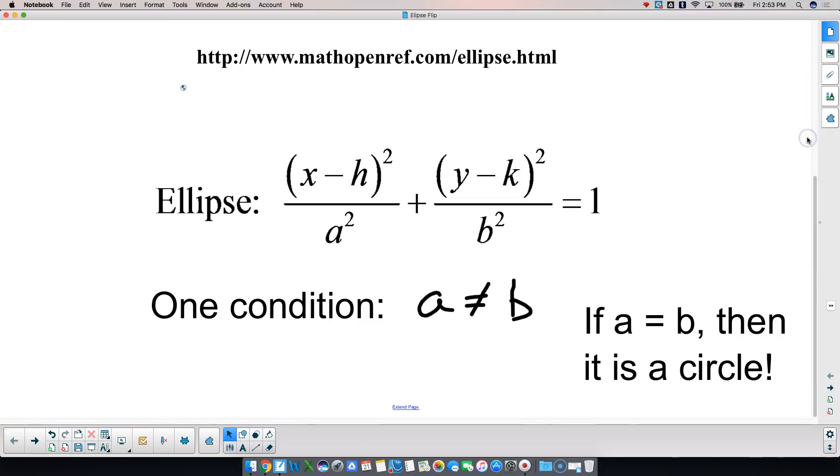There's one condition in an ellipse. Here is the standard form of an ellipse. So, we have, it looks very much like a circle, but the difference is, is that A squared and B squared have to be different. Because if they're the same, it is a circle, but if they're not, it's an ellipse, okay.